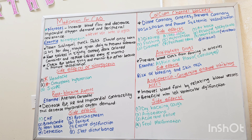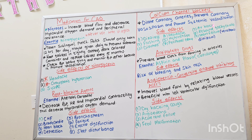Now let's discuss another class, which is calcium channel blockers. It dilates the coronary artery, prevents coronary vasospasm, and promotes systemic vasodilation. Side effects are dizziness, flushing, diarrhea, headache, hypotension, peripheral edema, AV block, rebound tachycardia, and heart failure — especially with verapamil and diltiazem.